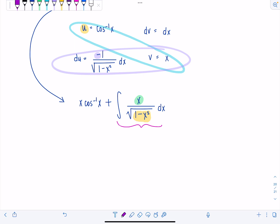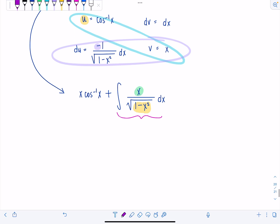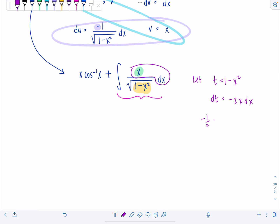So we're going to go ahead and let t equal 1 minus x squared, and then dt would be negative 2x dx. Does that match what we have in our integral? No. We need just x dx, so negative 1 half dt, that's equal to x dx. Fabulous.